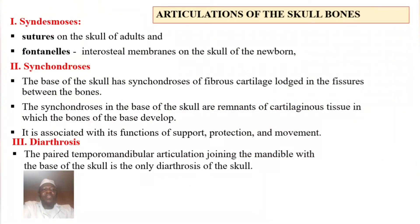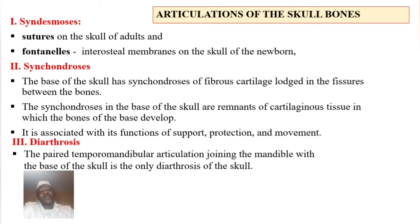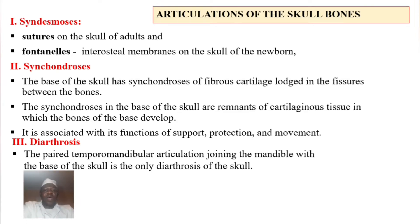Starting with the articulations of the bones of the skull — there are three main groups: syndesmosis, synchondrosis, and synostosis. Syndesmosis in the skull consists of sutures and fontanels. Synchondrosis involves cartilage. Diarthrosis is the true joint. Syndesmosis sutures are found in the adult skull, while fontanels are special membrane-covered gaps found in the skull of the newborn.